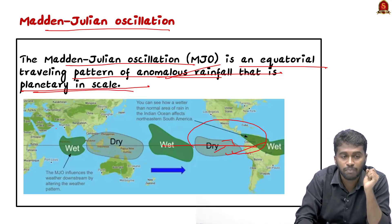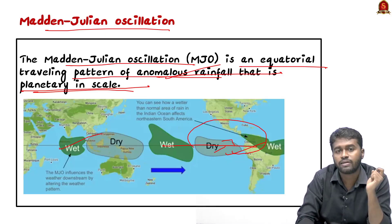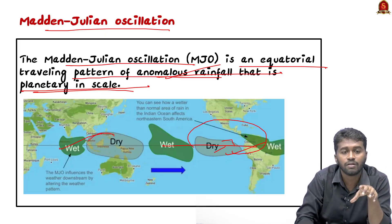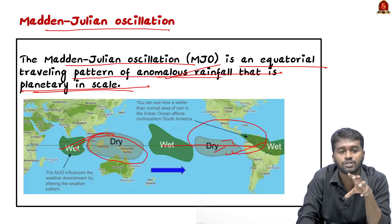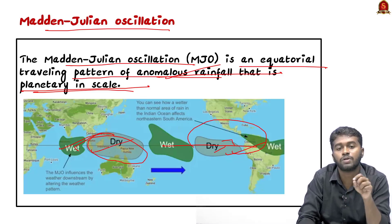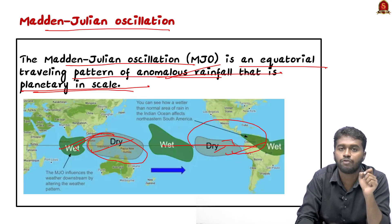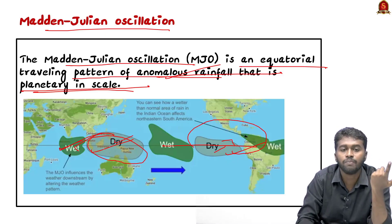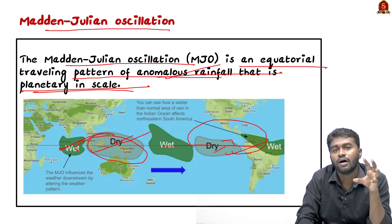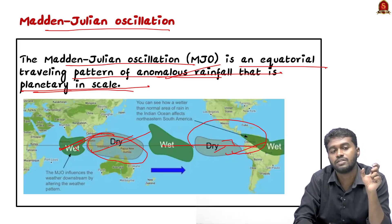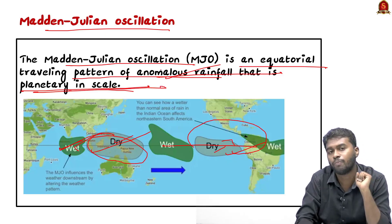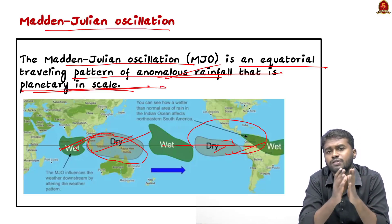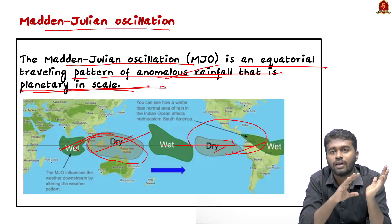The impact of the Madden-Julian Oscillation is planetary in scale. For example, if this phenomenon is active over the Indian Ocean, then the maritime continents — meaning areas of Southeast Asia — will receive suppressed rainfall. Similarly, if it is active over the maritime continents, then the Indian Ocean and the western Pacific will receive only limited rainfall. That is why the Madden-Julian Oscillation is described as planetary in scale.